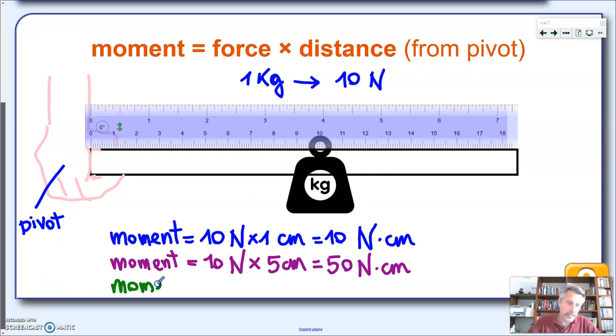And very quickly we can find out that in this third and last case we're going to see with this example, the moment is equal again to 10 newtons. That hasn't changed. But now the distance is not one, is not five, but is 10 centimeters. And the result is 10 times 10, which is a hundred newtons per centimeters.